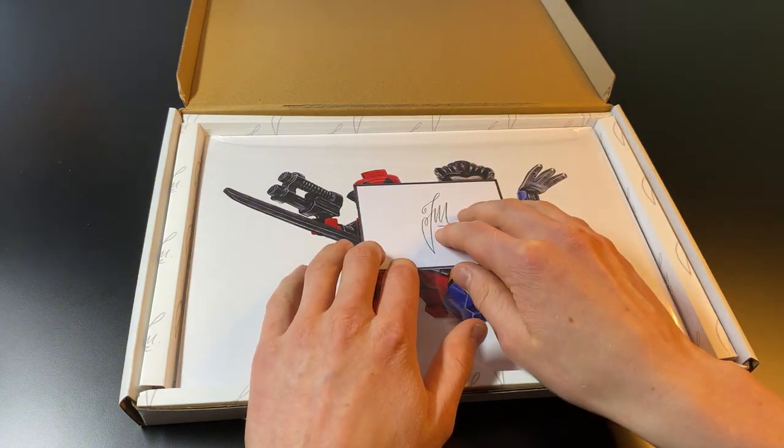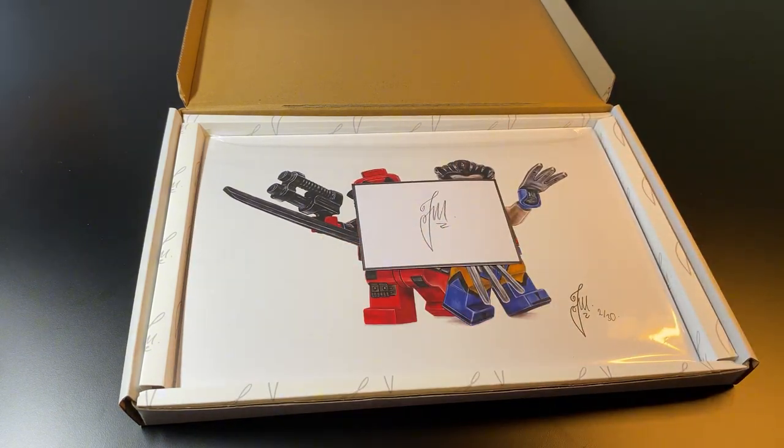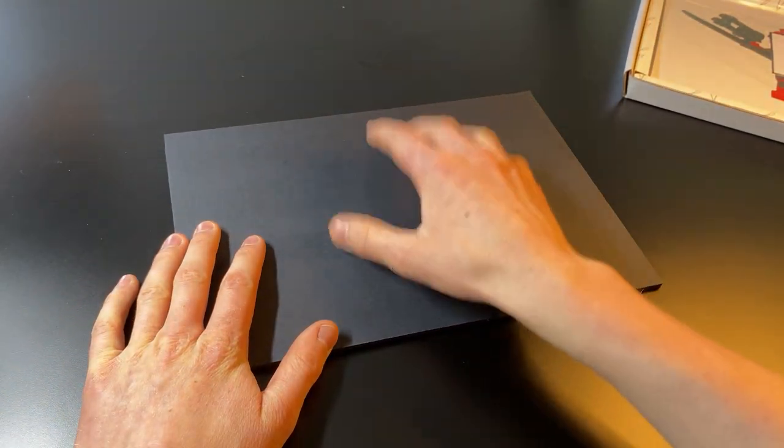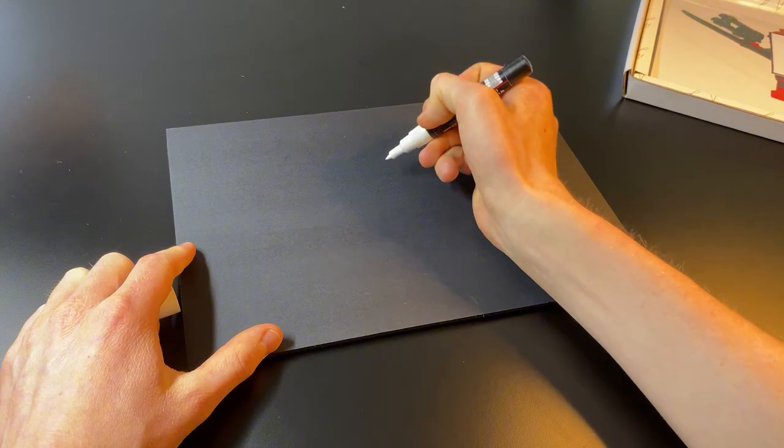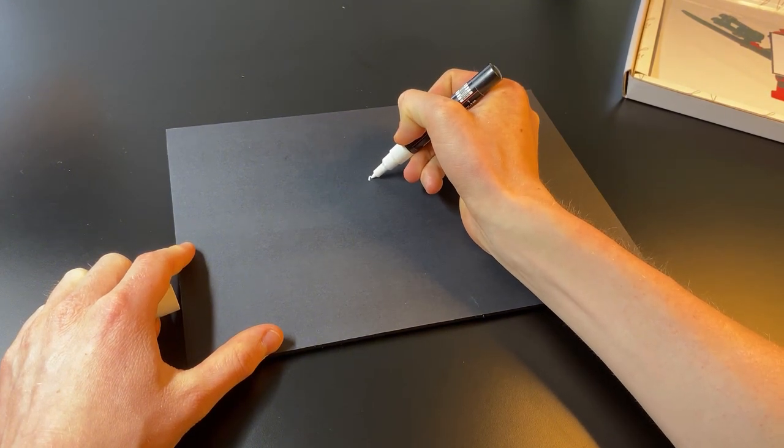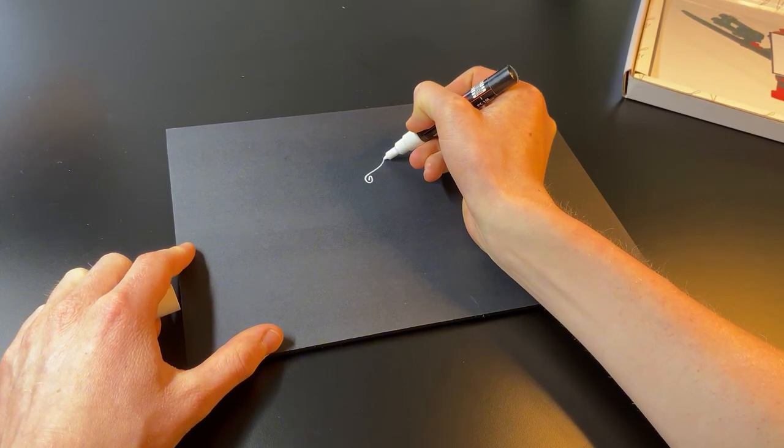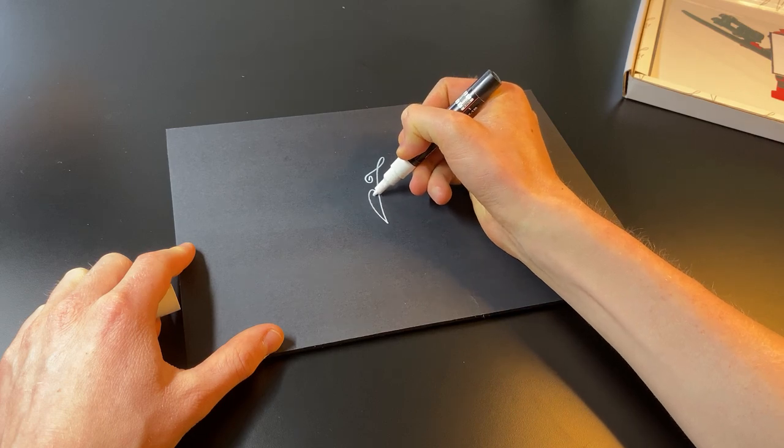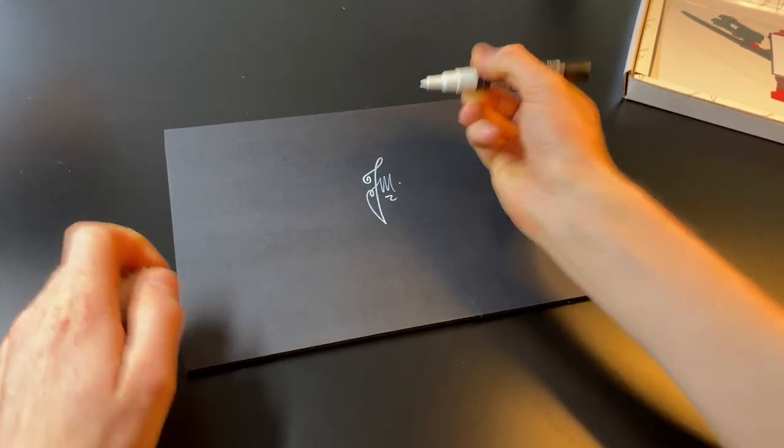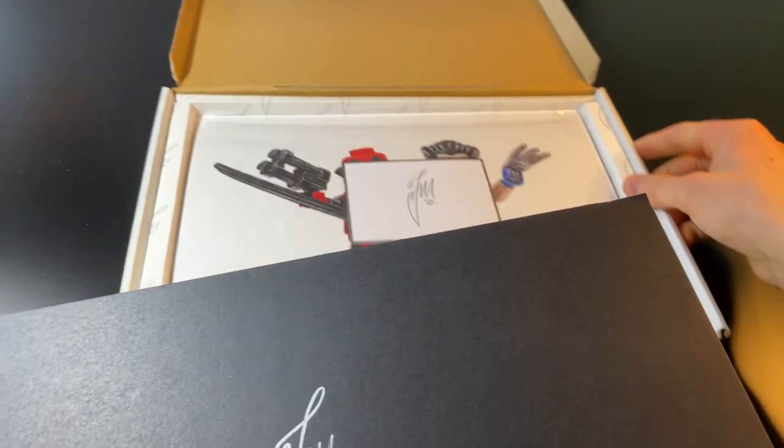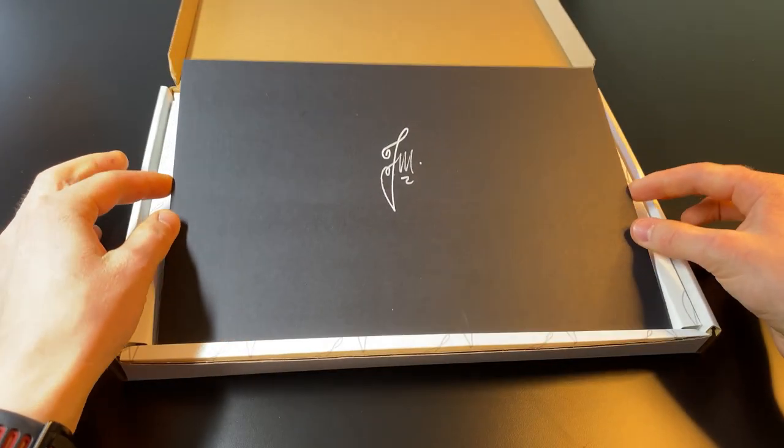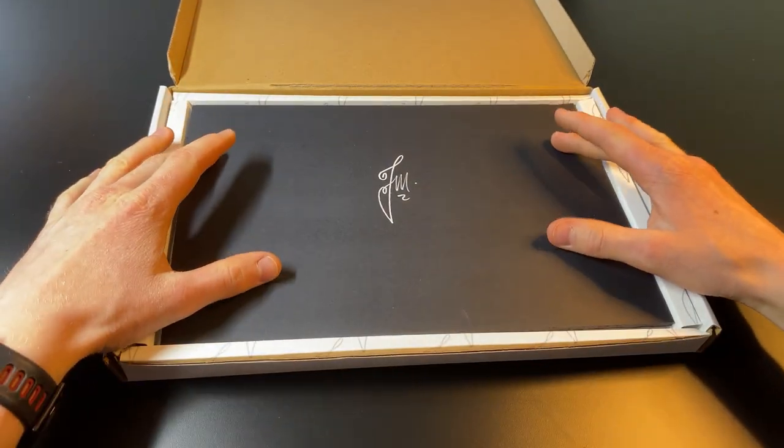And then I finish it off by moving this out of the way for a second. So this is a black foam board and I just get a white paint pen here and I just add a nice signature on the top here just to really make the cherry on top for this packaging. Just put this pen away a second and I'll bring the box back. As you can see here, just slots in very nicely there.